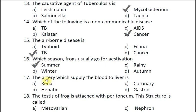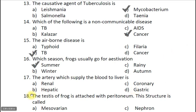Question seventeen: The artery which supplies blood to the liver is — A renal, B hepatic, C coronary, D gastric. A simple question; the correct answer is B hepatic. The artery is called the hepatic artery.